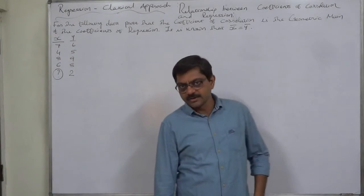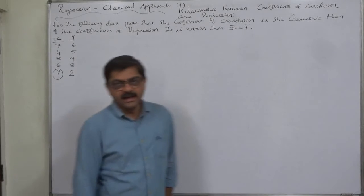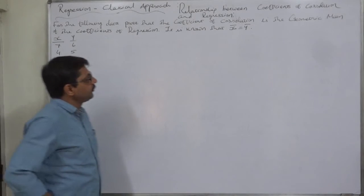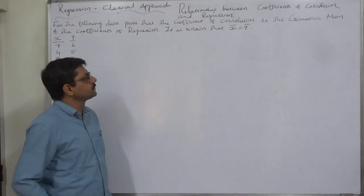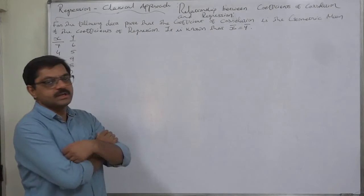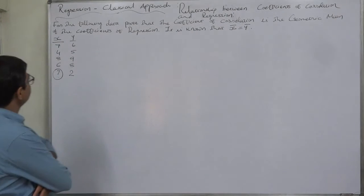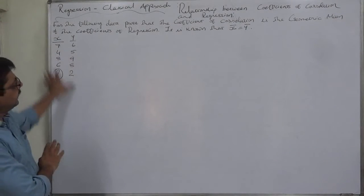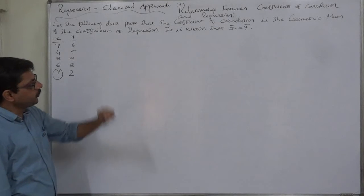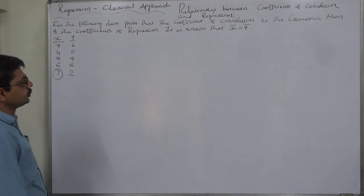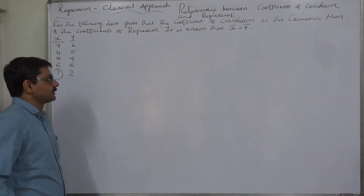Namaskar. In this regression case, we are going to study the relationship between coefficients of correlation and regression. The problem is: for the following data, prove that the coefficient of correlation is the geometric mean of the coefficients of regression.